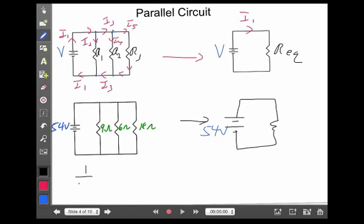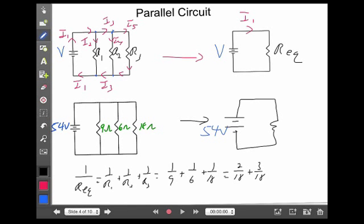Now to get Req, well for parallel, I do this 1 over Req. It's 1 over R1 plus 1 over R2 plus 1 over R3. So that would be 1 over 9 plus 1 over 6 plus 1 over 18. Now we've got to do everybody's fun thing, get a common denominator here, which would be 18. So that 1 ninth is 2 18ths. 1 sixth is 3 18ths. And 1 18th.